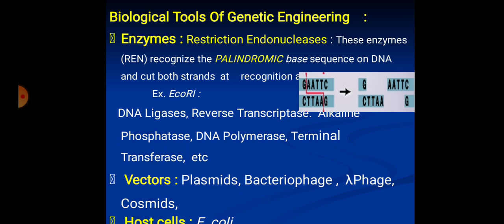The biological tools required for R-DNA technology — the major ones are enzymes. The most important enzymes are restriction endonucleases, abbreviated as REN. These enzymes recognize a particular base sequence called a palindromic sequence, which reads the same in either direction. On both strands the reading is the same, from the 5' end to the 3' end. For example, the restriction endonuclease from E. coli, EcoR1, recognizes the palindromic sequence GAATTC. It cuts both DNA strands between G and A, producing sticky ends.